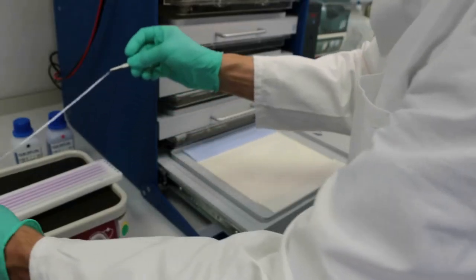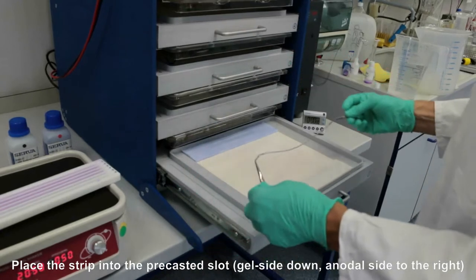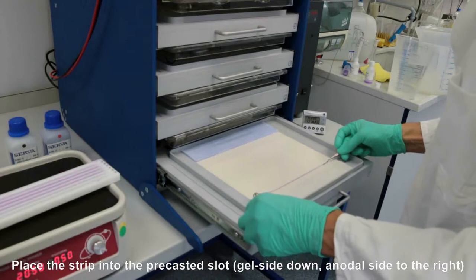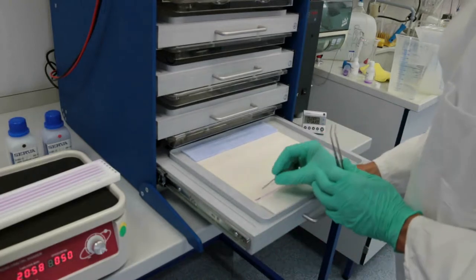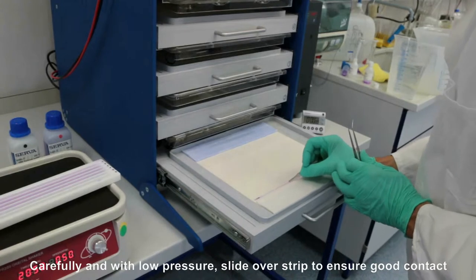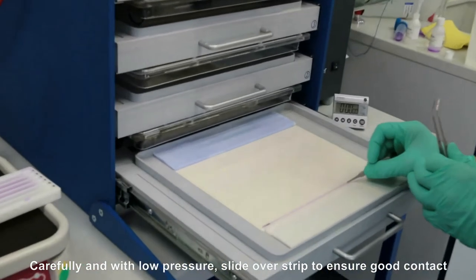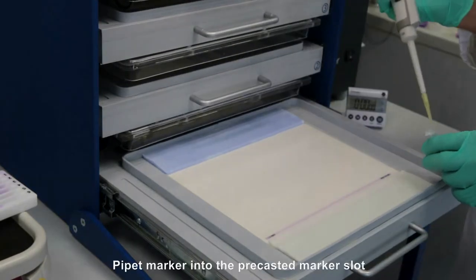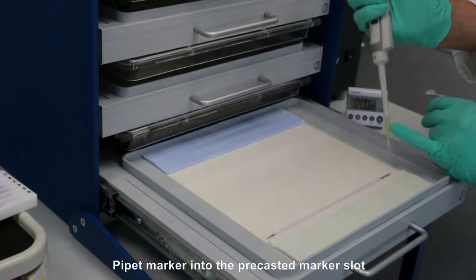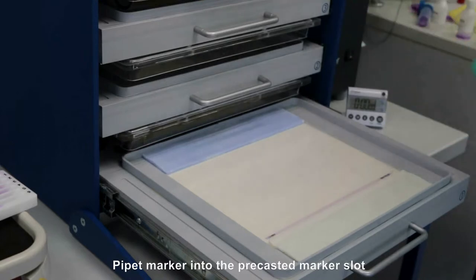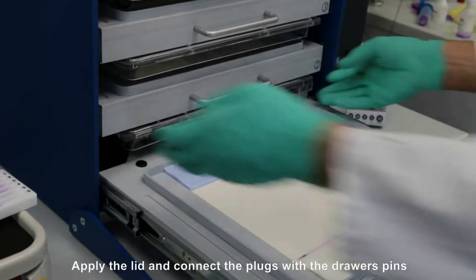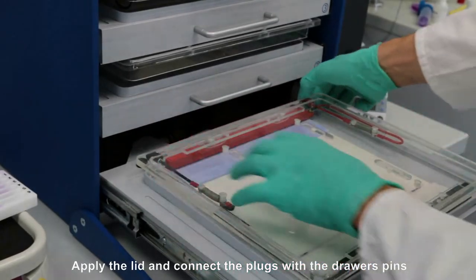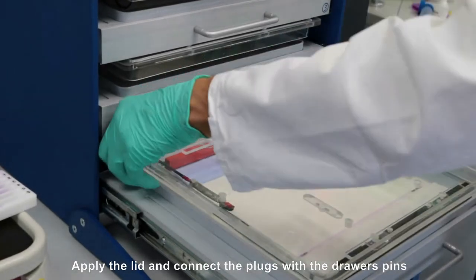Place the strip into the pre-casted slot, gel side down and the anodal side to the right. Carefully and with low pressure slide over the strip's backing to ensure good contact. Pipette marker into the pre-casted marker slot. Apply the lid and connect the lid's plugs with the drawer's pins.